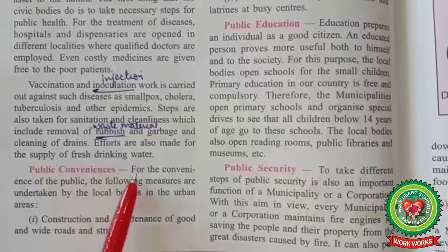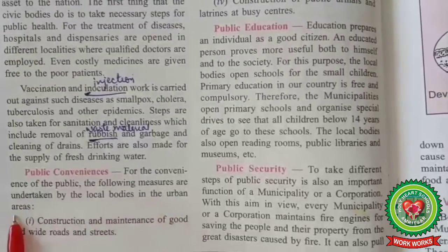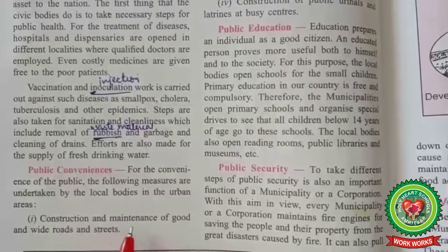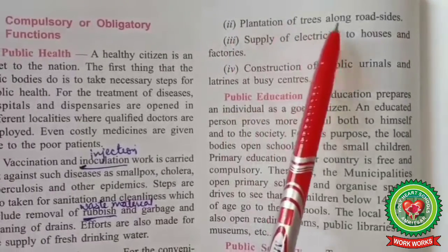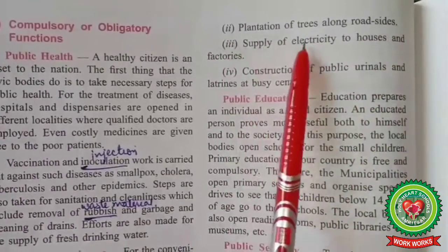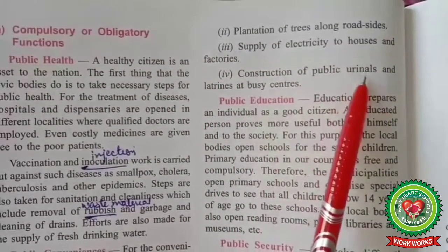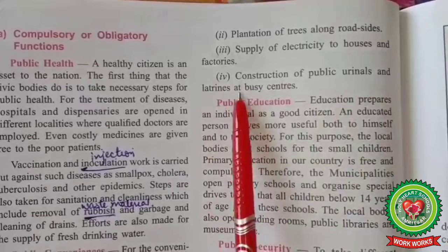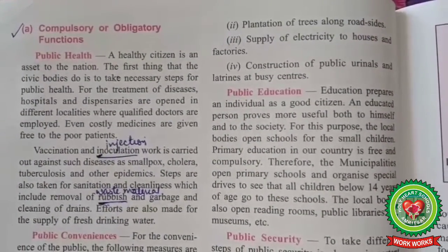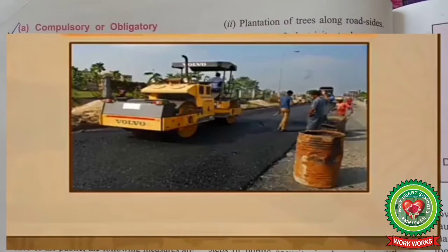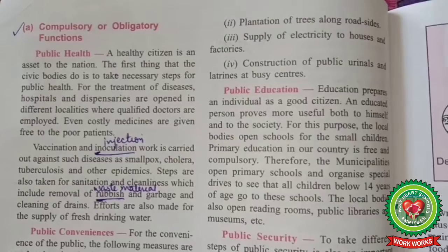2. Public Conveniences: For the convenience of the public, the following measures are undertaken by local bodies in urban areas: construction and maintenance of good and wide roads and streets; plantation of trees along road sides; supply of electricity to houses and factories; construction of public urinals and latrines at busy centers; provision of public conveniences and utilities like roads, buildings, bus shelters, plantation of trees, and provision of public urinals and toilets.